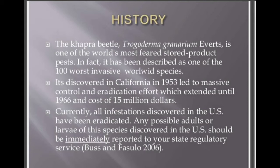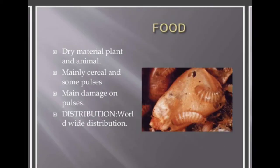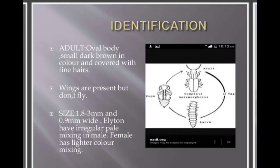Any possible adult or larva of this species discovered in the USA should be immediately reported to your state regulatory service. The main food, or we can say the host of the Khapra beetle, is mainly pulses and stored grain. It feeds on dry plant and animal material, mainly cereals and some pulses, and it can cause major damage to pulses. Its distribution is worldwide, distributed all over India.